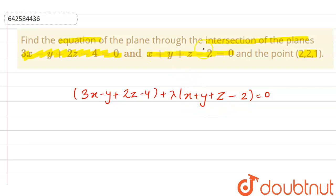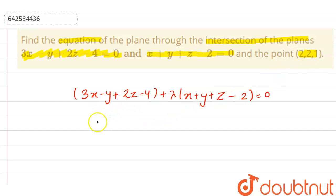Now, this plane is also passing through the point (2, 2, 1). That means the point (2, 2, 1) will also satisfy this equation. So let's put x = 2, y = 2, z = 1 into the equation. So it is 3 into 2, that is 6, minus 2, plus 2 into 1 that is 2, minus 4, plus lambda times...